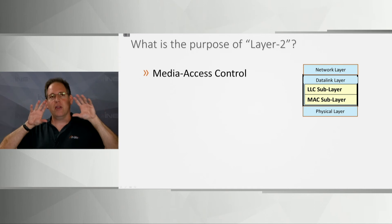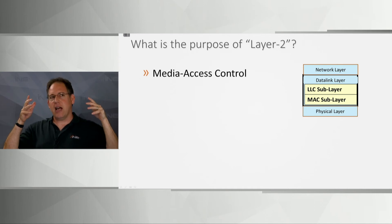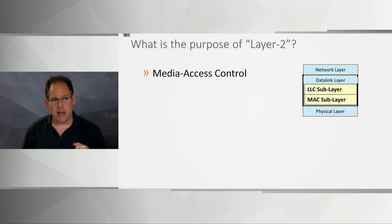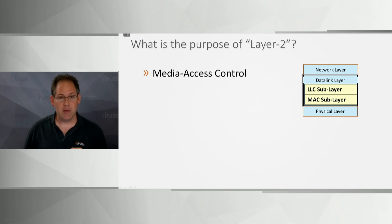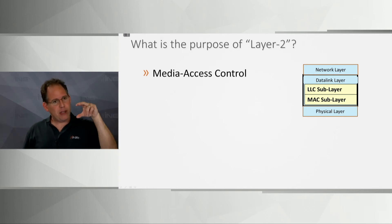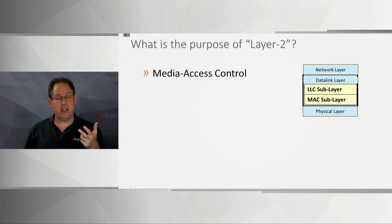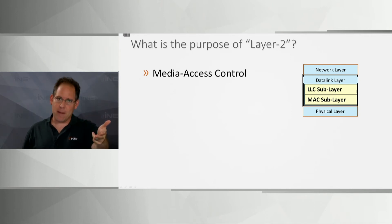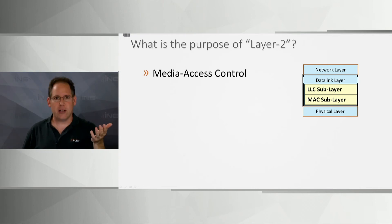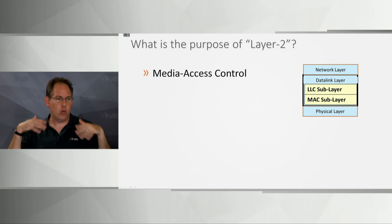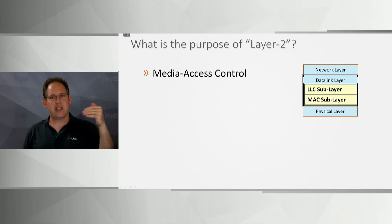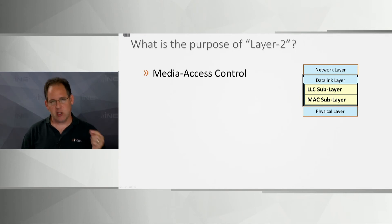The MAC sub-layer addresses questions like: how do I know when I can access the cable — when is it my turn versus when should I wait? When I put data on the wire, do I need to address it so the destination knows it's for them? If so, what does that address look like, how big should it be, and what do the bits represent? When something comes in on the cable, how do I know it's for me?